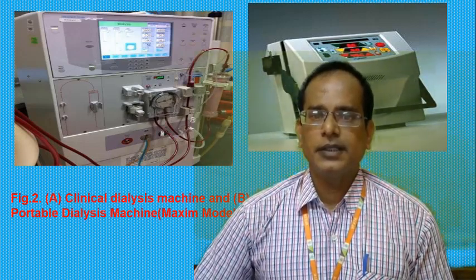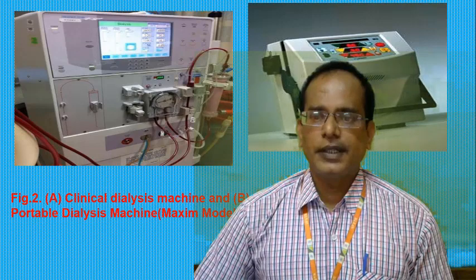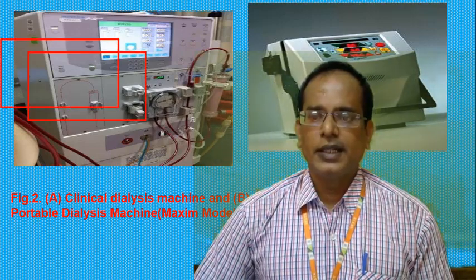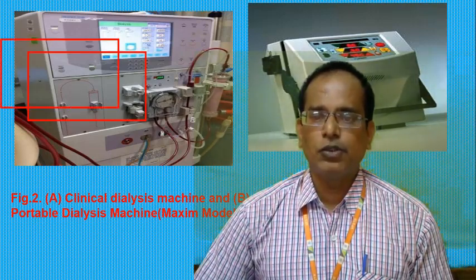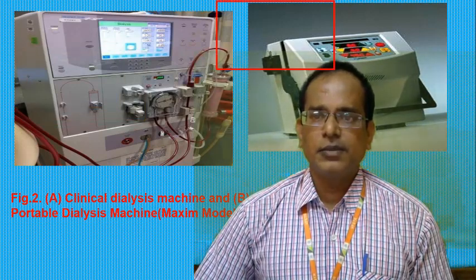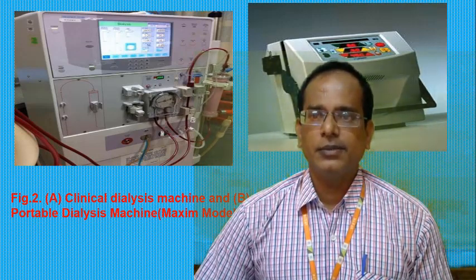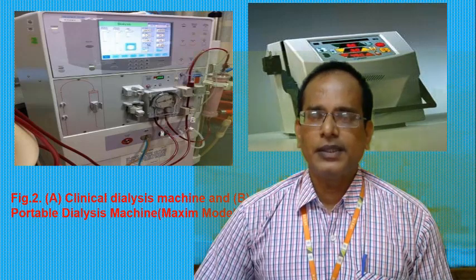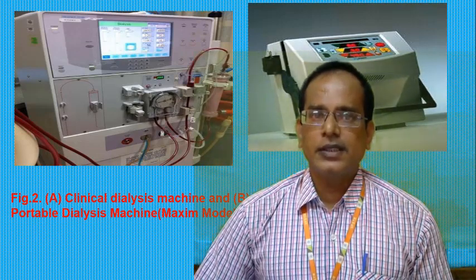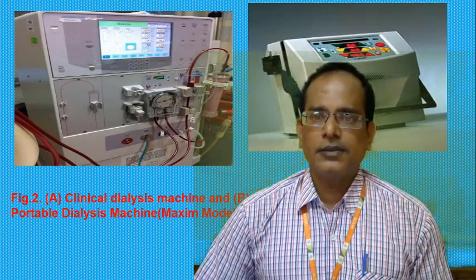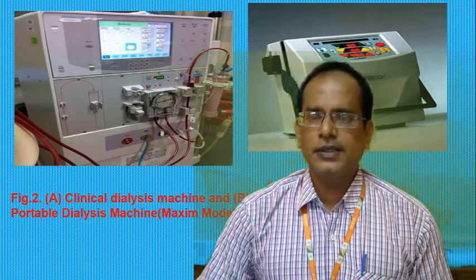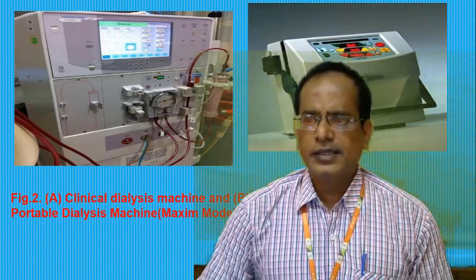Figure A shows the clinical dialysis machine and Figure B shows the portable dialysis machine. The key difference is that the clinical machine can serve multiple patients, whereas the portable machine is used for one person at a time.